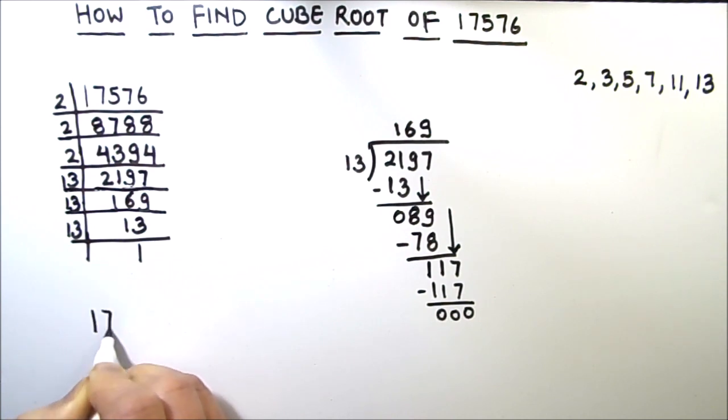13 times 1 and 13 times 3 and 13 is divisible by 13 one time. So we got the factors of 17,576.